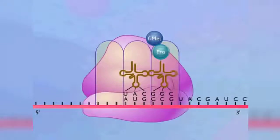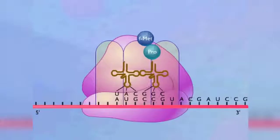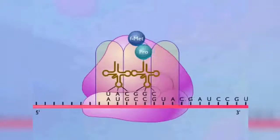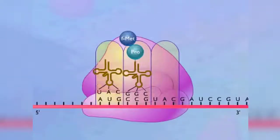The ribosome now advances a distance of one codon, and the transfer RNA that carried the formyl methionine is released at the E-site.